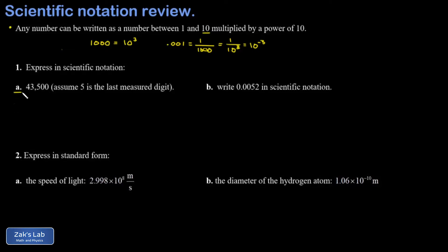Let's apply this to the first example. I'm given the number 43,500—I'm told to assume that 5 is the last measured digit, and I'll explain why that matters in a moment. I'm trying to write this in scientific notation and I immediately realize this is just 4.35 times 10,000.